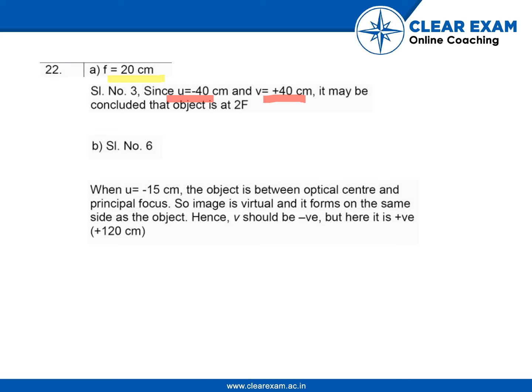The incorrect observation is serial number 6. As we can observe here, the object distance is minus 15 centimeters and the object is between the optical center and principal focus. So the image is virtual and it forms on the same side as the object. Hence v should be negative, but here it is positive, that is plus 120 centimeters, so it is wrong.